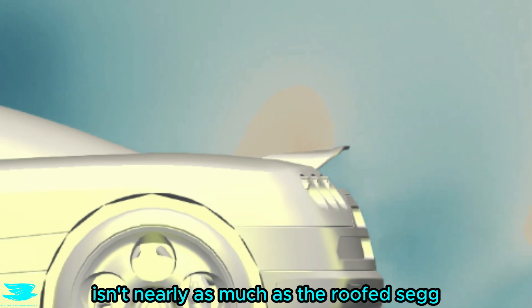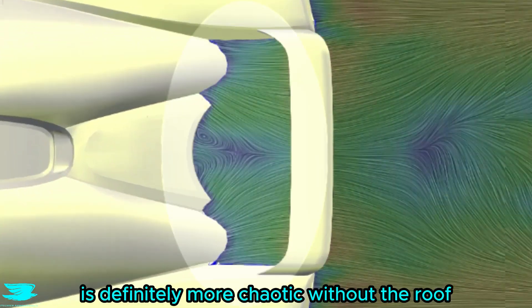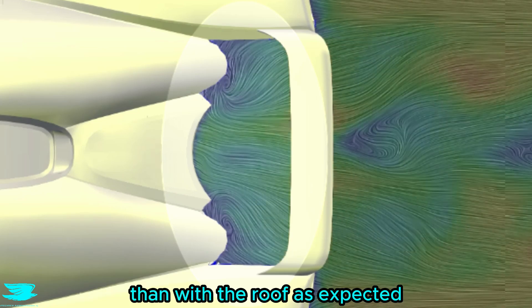Now this difference in pressure isn't nearly as much as the roofed seg, but it's still better than a poke in the eye. Looking from on top, the flow just ahead of the wing is definitely more chaotic without the roof than with the roof as expected.